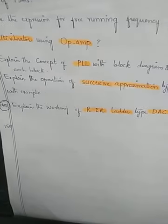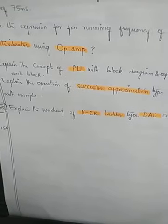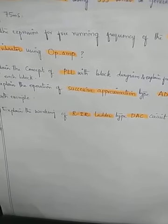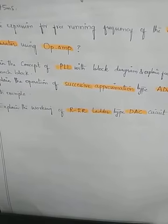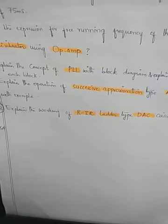The next question is: explain the working of the R-2R ladder type DAC (Digital to Analog) circuit. Using the R-2R ladder, you can write this as well. These are a few of the long answer questions, and we will see more LAQ questions in the next video.